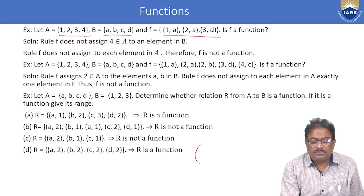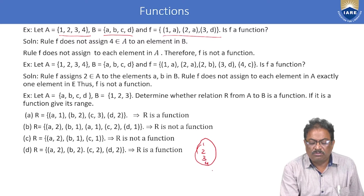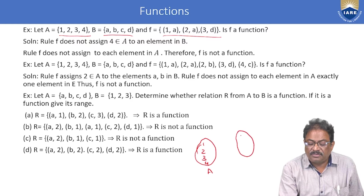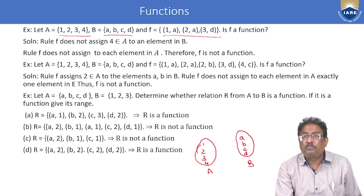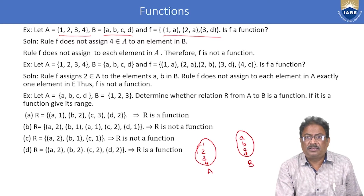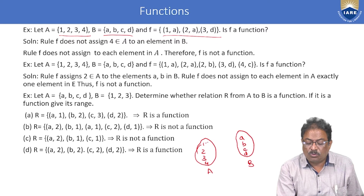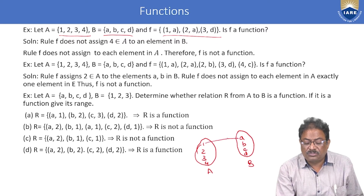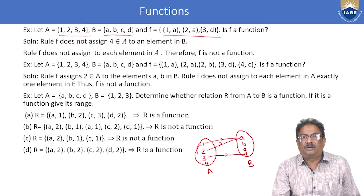Set A is {1, 2, 3, 4} and set B is {A, B, C, D}. The relation is given as: 1 maps to A, 2 maps to A, and 3 maps to D. Now we have to verify whether it is a function or not.